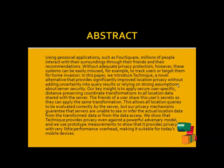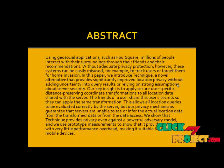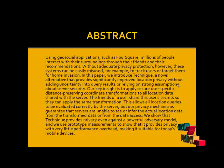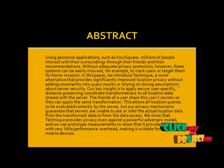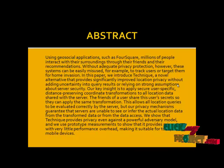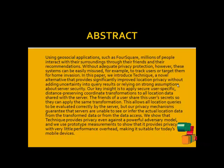The friends of the user share this user's key sequence so they can apply the same transformation. This allows all location queries to be evaluated correctly by the server. Our privacy mechanism guarantees that servers are unable to see or infer the actual location data from the transformed data or from the data access. We show that the technique provides privacy even against a powerful adversary model, and we use a prototype measurement to show that it provides privacy with little performance overhead, making it useful for today's mobile devices.